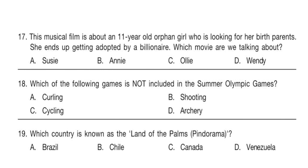Question 17. This musical film is about an 11-year-old orphan girl who is looking for her birth parents. She ends up getting adopted by a billionaire. Which movie are we talking about? The answer is option B: Annie. Question 18. Which of the following games is not included in the Summer Olympic Games? Don't forget to hit the like button. The answer is option A: Curling.